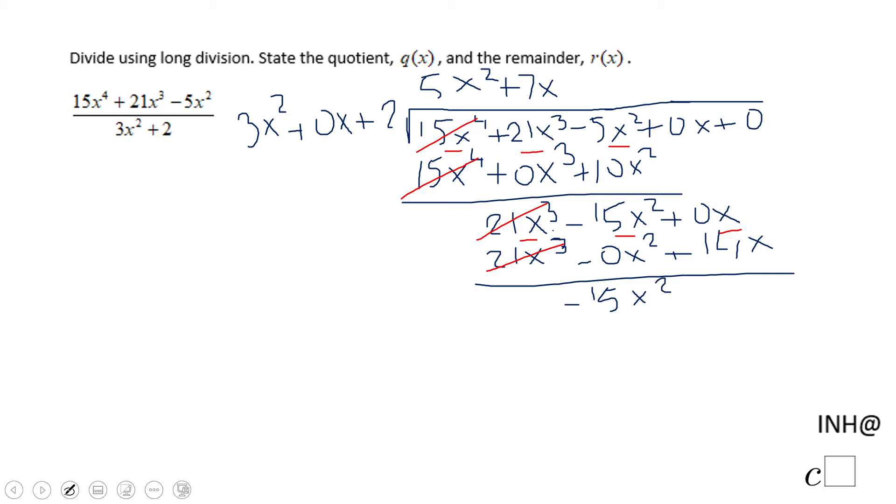0x minus positive 14x. That is minus 14x. And plus 0 here. And we have to do it only one more time.